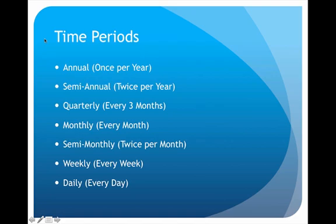In the overall realm of possibilities with time periods, we have many different ones to choose from. The first time period would simply be annual, and this would actually be the bare minimum because companies are required to publish their financial statements at least once a year. If they want to report more frequently, they could choose to go with a semi-annual reporting period, which would mean twice per year or every six months.